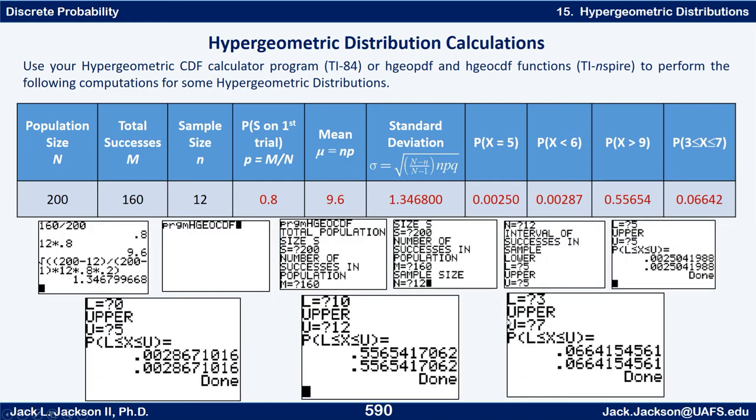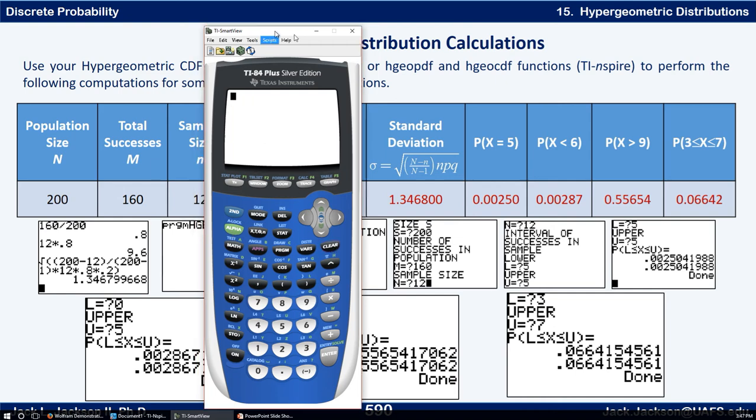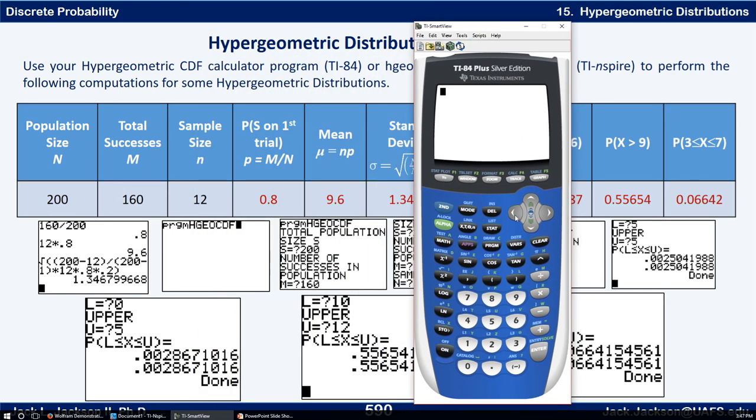Now if you have a TI-84 then it's slightly different the way you work it but it's basically the same. This first part works out almost identical for finding the p, the mu, and the sigma. You can look at that screen. But to do this other part let's pull up a calculator here. Let's do this. I'll at least do one of them.